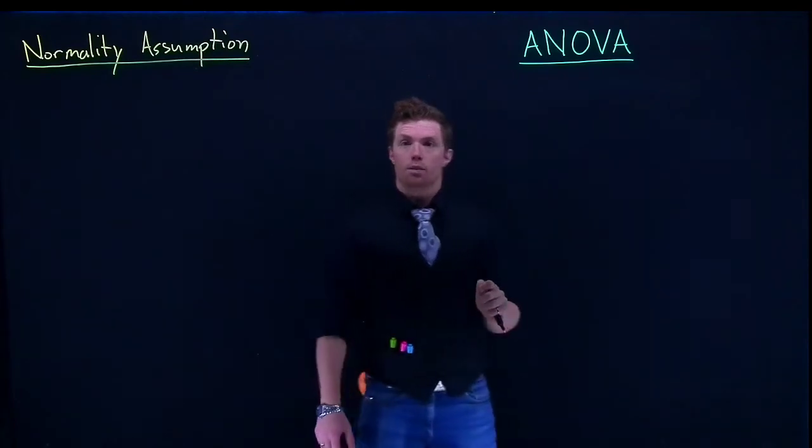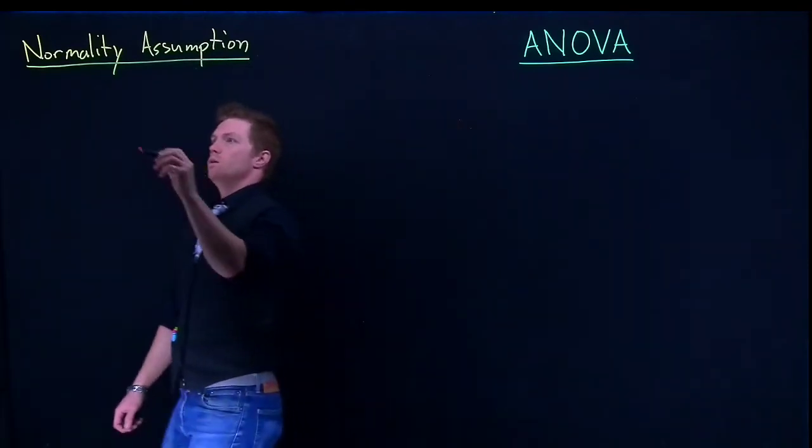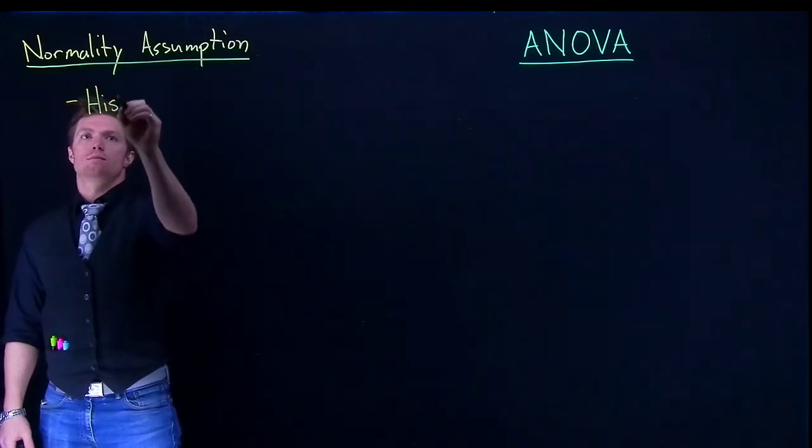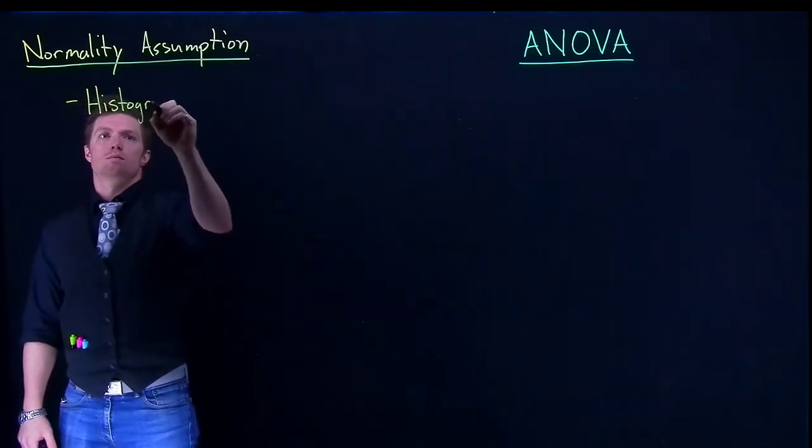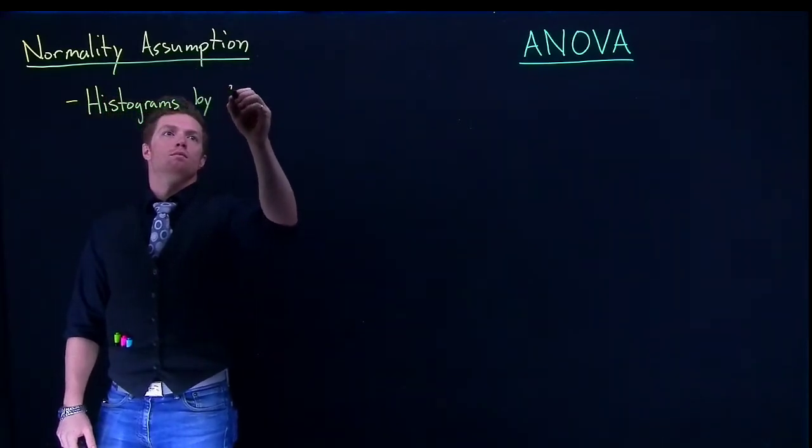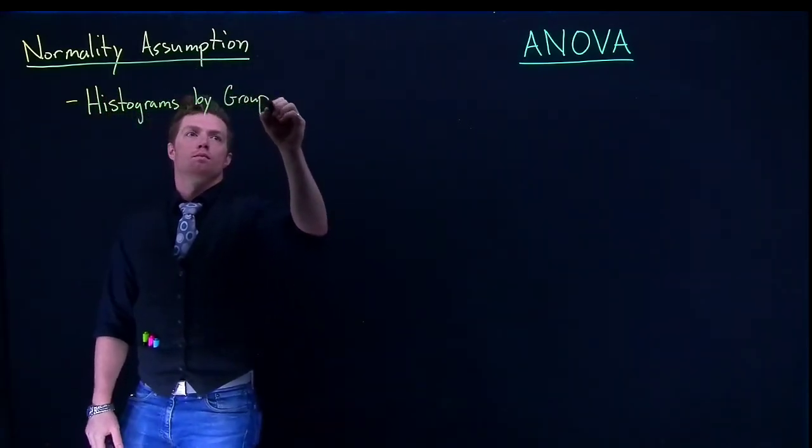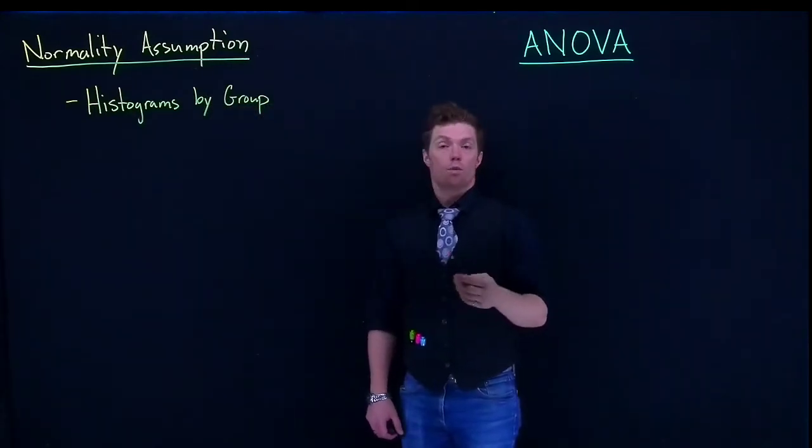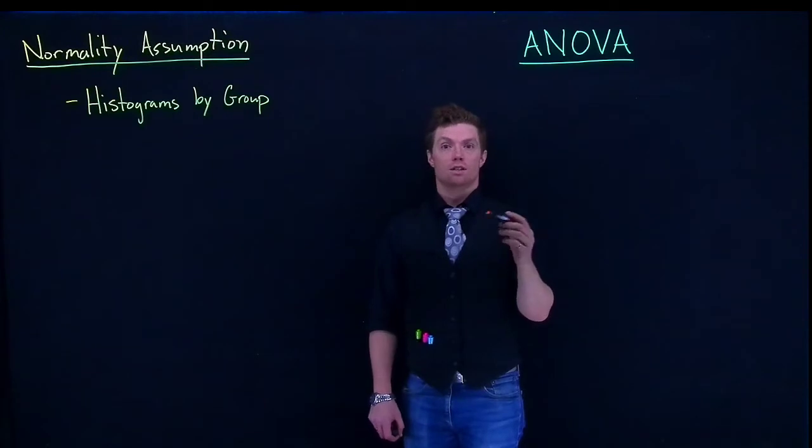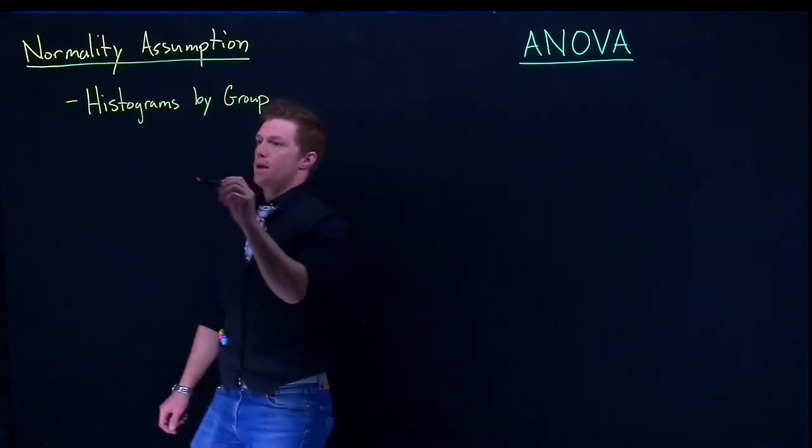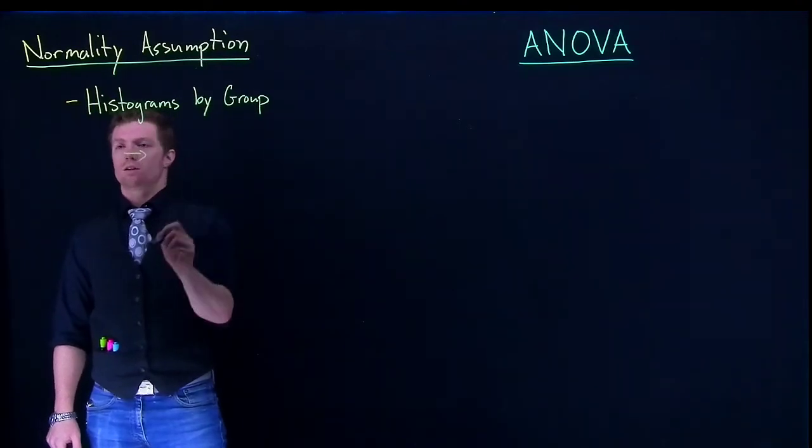So the three ways that we've really got are one is we can just look at the histograms. So what this allows us to do is it allows us to basically form a histogram for every single group that we have and we can see do they roughly form a normal distribution or some sort of bell curve.